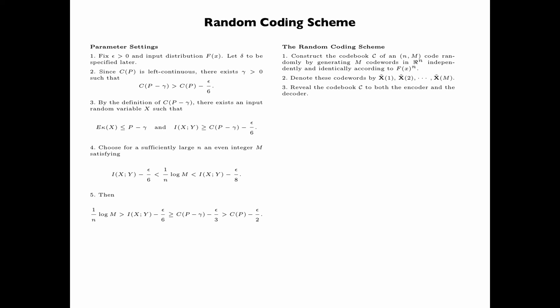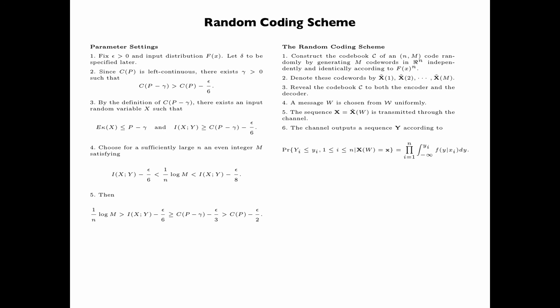We now describe the random coding scheme, which is very similar to the discrete case. Construct the codebook C of an (n, M) code randomly by generating M codewords in R^n independently and identically according to the product distribution f(x)^n. Denote these codewords by x^(1), x^(2), up to x^(M). Reveal the codebook C to both the encoder and the decoder. A message W is chosen uniformly from the message set. The sequence X, which is the codeword corresponding to the chosen message, is transmitted through the channel. The channel outputs a sequence Y according to the conditional PDF f(y|x). The received sequence Y is decoded to message W if x^(W), the codeword corresponding to message W, and the received sequence Y are mutually delta-typical, and there does not exist another codeword which is also mutually delta-typical with the received sequence Y.